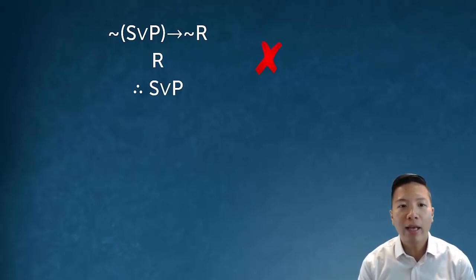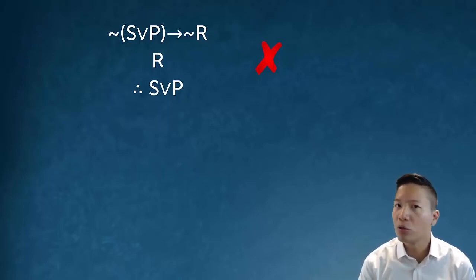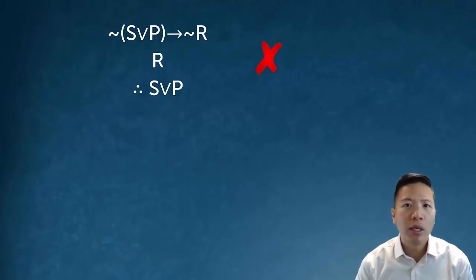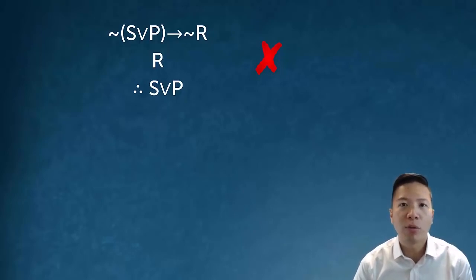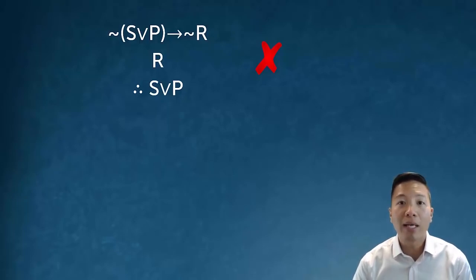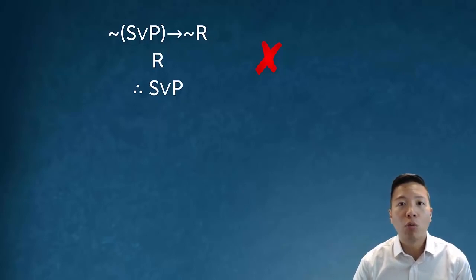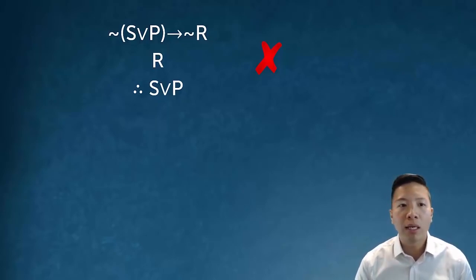Well, what if I had negation negation r? Could I then conclude s or p using modus tollens? Again, the answer is no. The result of a modus tollens is the negation of the antecedent, but the antecedent is literally not bracket s or p. So what I would actually infer from modus tollens would be negation negation s or p.